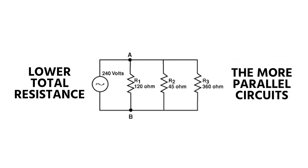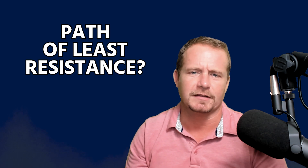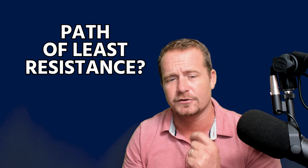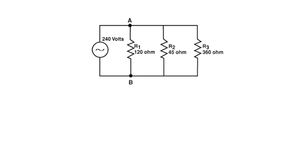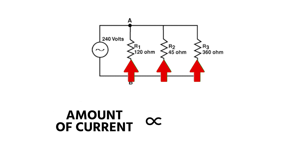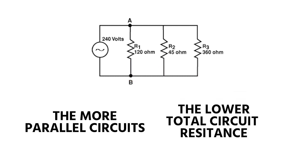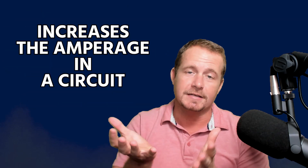The more parallel circuits you add, the more paths you give the electrons to flow through, the more current you're going to have. A lot of people will say electricity takes the path of least resistance, but if that were the case, the only circuit with any current would be the 45-ohm circuit because it's the lowest. In reality, electricity takes all paths and the amount of current through each path is proportional to its resistance. The more parallel circuits you have, the lower the total circuit resistance, and the lower the resistance, the higher the amps.